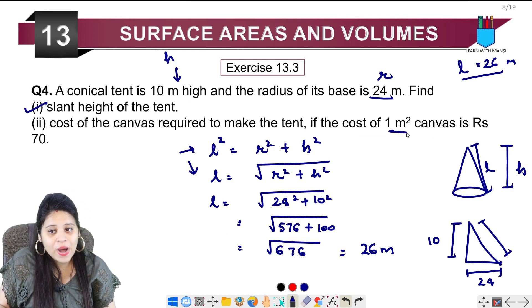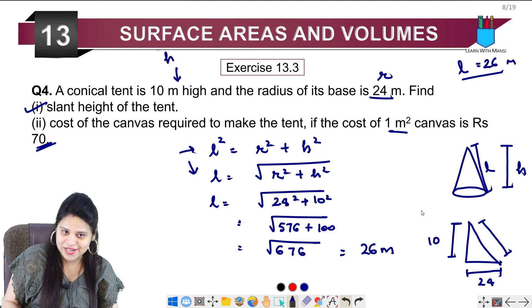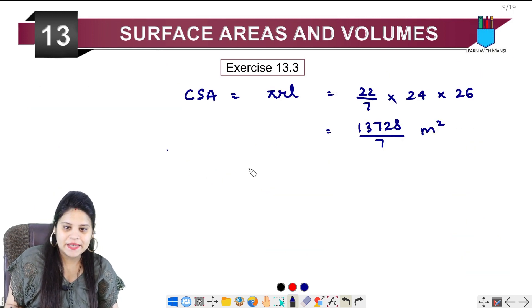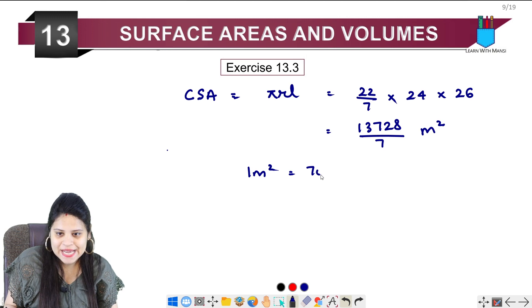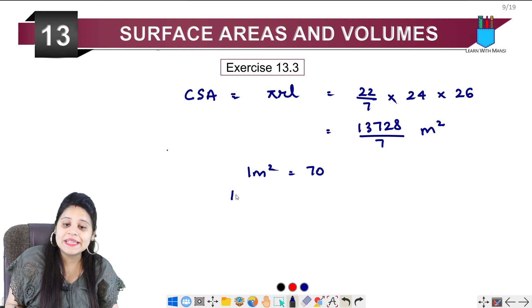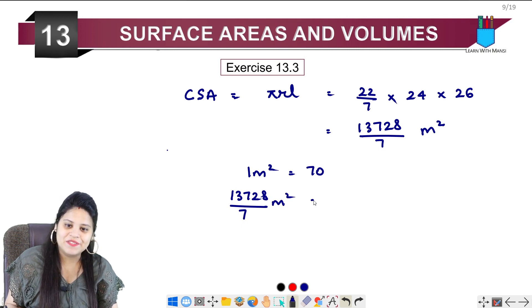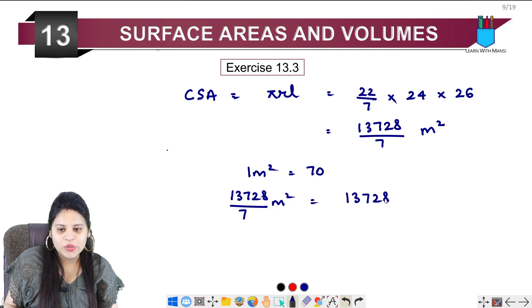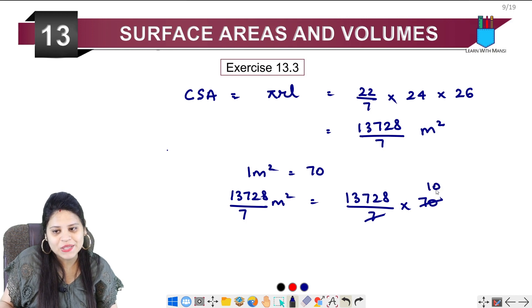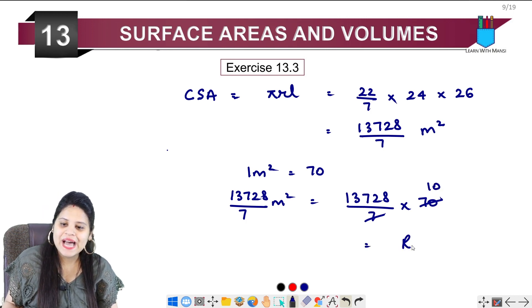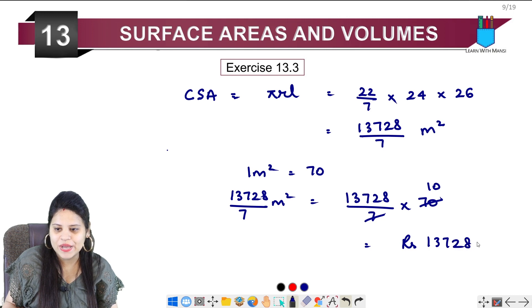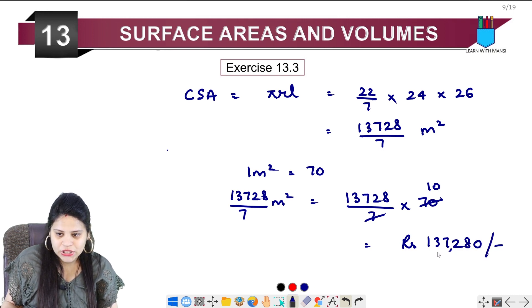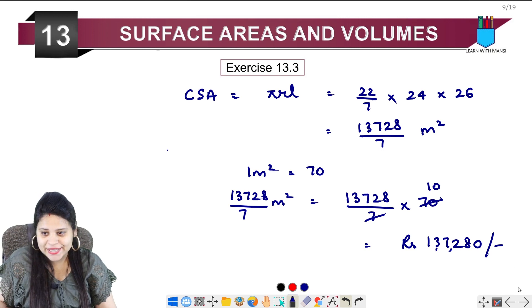1 meter square costs 70 rupees. So the cost for 13,728 upon 7 meter square will be 13,728 upon 7 multiplied by 70. 7 and 70 cancel, I get 10. So we have rupees 137,280. So the answer is 1,037,280 rupees.